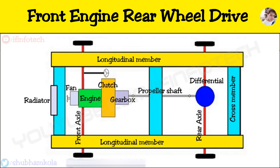Now we see the advantages of front engine rear wheel drive. First is balanced weight distribution between front and rear wheels, which provides good handling characteristics. Next, radiator cooling is natural — that is by air — so it decreases the power required for cooling. It has better braking efficiency because even weight distribution helps to prevent lockup. Maintenance and accessibility of the engine and gearbox is easy, with simple control over the accelerator and clutch. A large luggage space is also provided behind the rear seat.